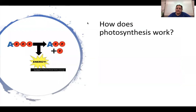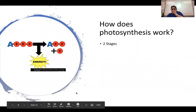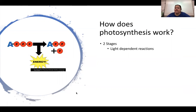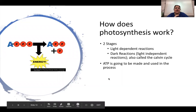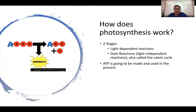How does photosynthesis work? There are two stages: the light-dependent reactions and the dark reactions (the light-independent Calvin cycle). ATP is both made and used in photosynthesis, because we need to invest ATP to build the covalent bonds in glucose. The Calvin cycle is not as complex as the Krebs cycle.